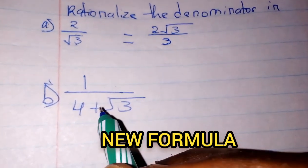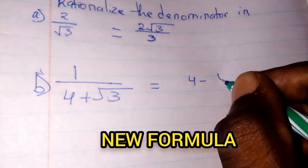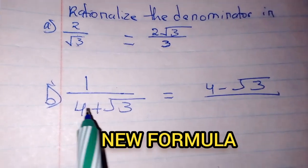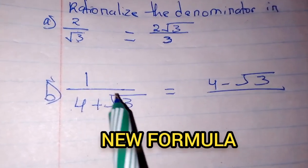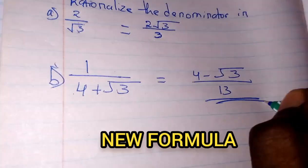Bring this at the top but we change the sign. It is equal to four minus root three. Then here at the bottom, you take this times this, which is 12 plus 1, equals 13. You will be done with your answer.